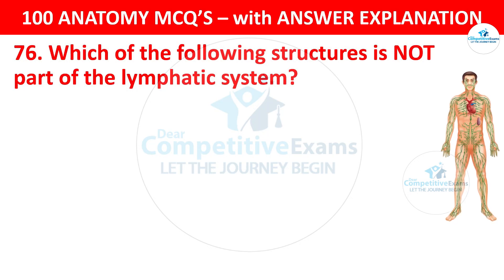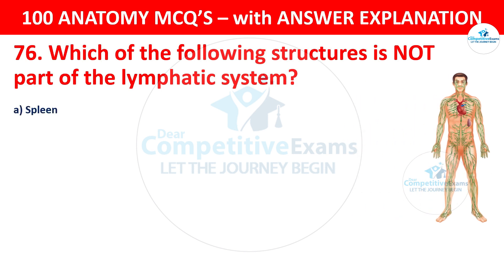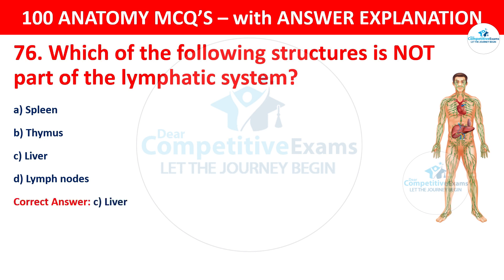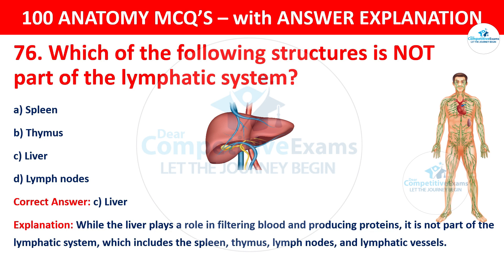Which of the following structures is not part of the lymphatic system? The options are: Spleen, Thymus, Liver, Lymph nodes. The correct answer is C, i.e., liver. While the liver plays a role in filtering blood and producing proteins, it is not part of the lymphatic system, which includes the spleen, thymus, lymph nodes, and lymphatic vessels.